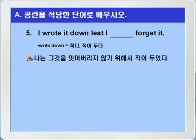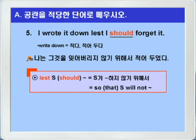5번이죠. I wrote it down. write down이 적다, 적어두다, 이런 뜻이니까, 나는 그것을 적어두었다. Lest I blank forget it. 그것을 잊어버리지 않기 위해서. 나는 그것을 잊어버리지 않기 위해서 적어두었다. lest가 있으니까 should를 쓰면 되겠습니다. lest 주어 should 동사 원형, 또는 should를 생략하고 동사 원형만 써서, 주어가 뭐뭐하지 않기 위해서, 즉 so that 주어 will not 동사 원형하고 같은 뜻이 된다 그랬죠. I wrote it down, lest I should forget it.